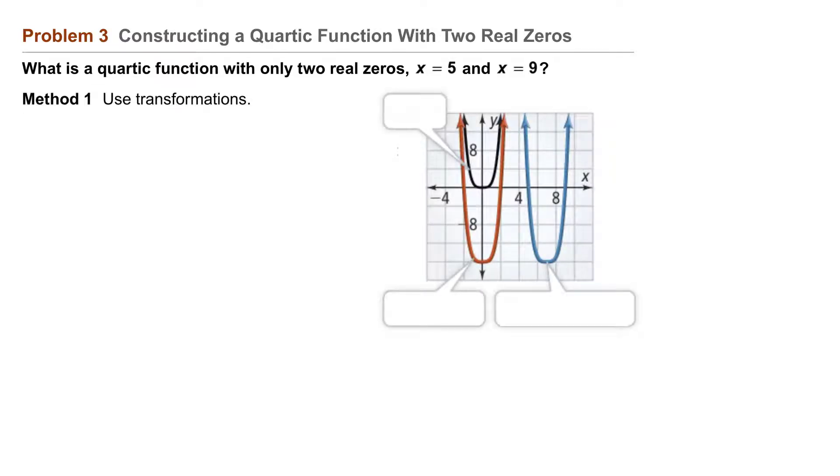Method 1: Use transformations. First, we'll find a quartic with zeros at plus or minus 2. If we translate the basic quartic y equals x to the fourth power 16 units down, we get y equals x to the fourth power minus 16.